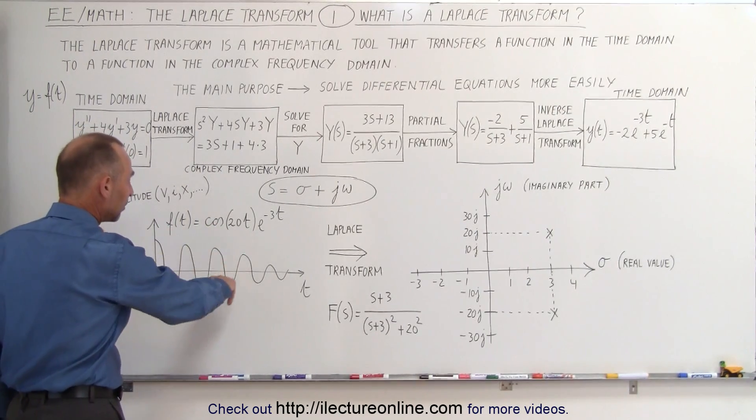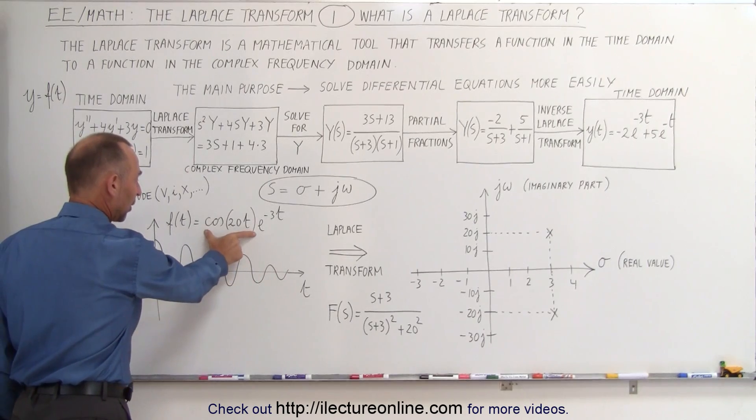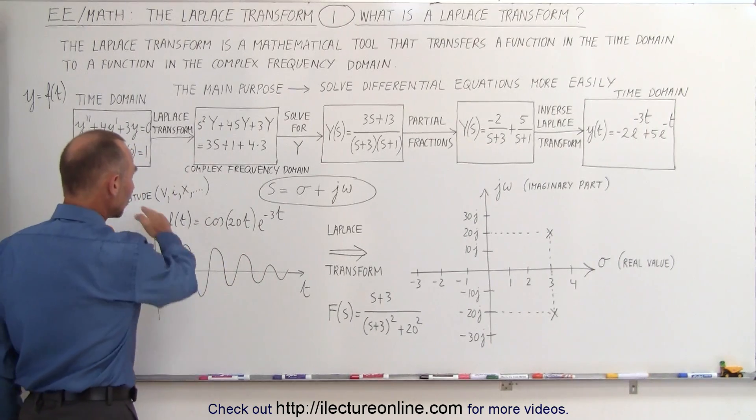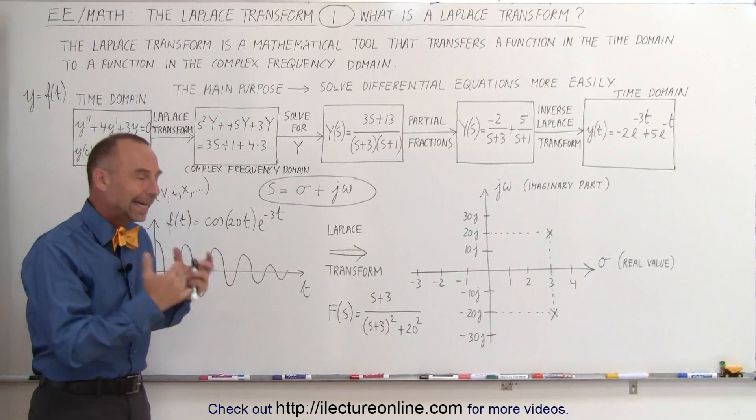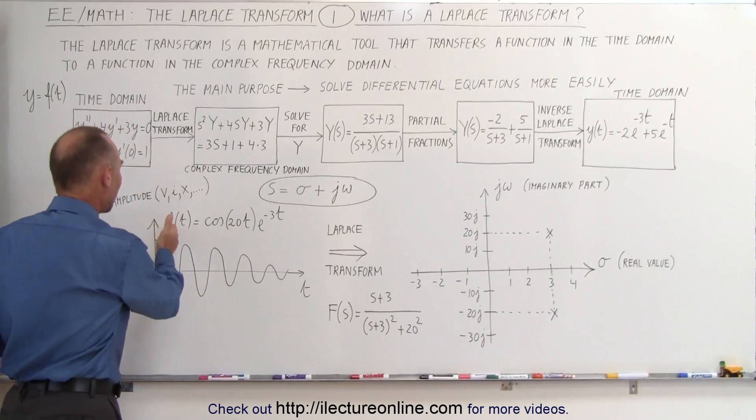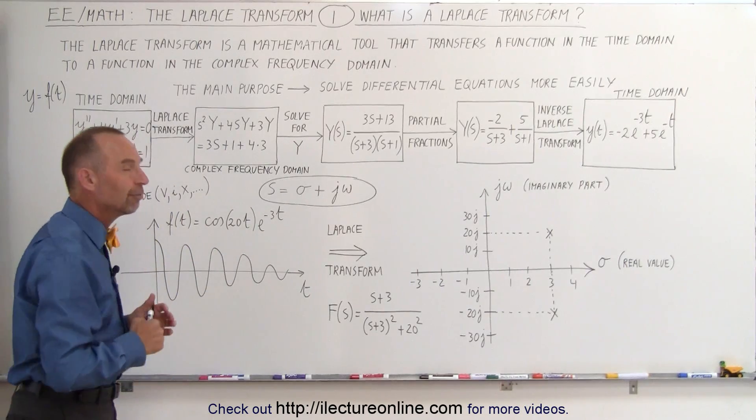And here you can see there's an oscillating part of that function coming from this part of the function here, and then there's an exponential decay function coming from this part of the function there. They both play a role in that function, so we see that the amplitude depends on the independent variable t.